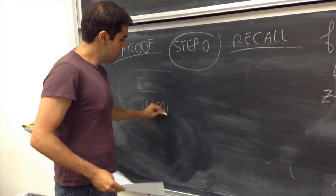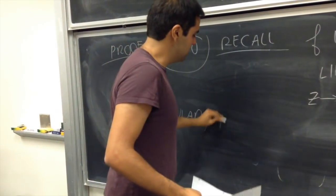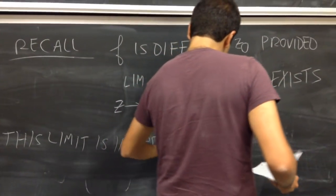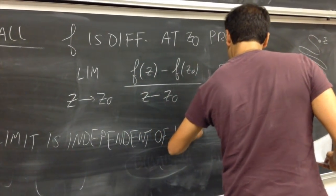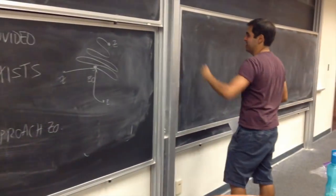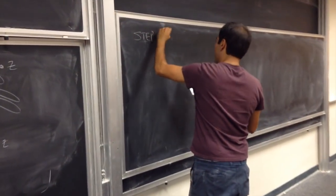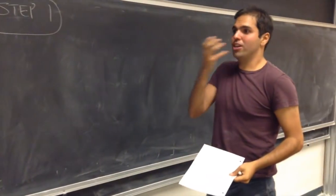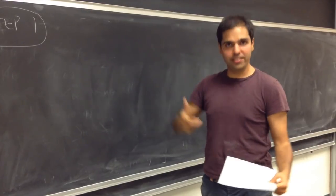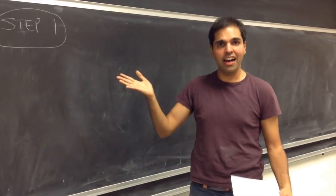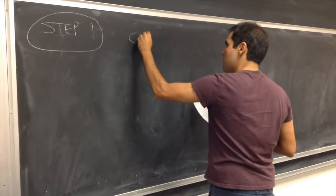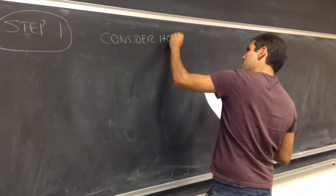So again, let me write that: in particular, this limit is independent of how we approach z-naught. Now we can start. Step one: basically what we're going to do, we're going to choose two very smart paths, and that will give us two pieces of information. But because this limit is independent of the path, it will still give us the same number at the end. So consider, first of all, the horizontal path.